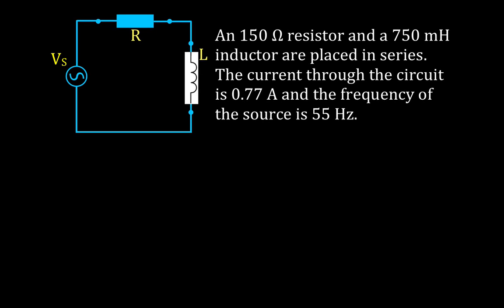This is the circuit we have. We have an RL circuit — a resistor and an inductor — and a time-varying voltage source. The resistor has a resistance of 150 ohms and is placed in series with an inductor of 750 millihenrys. The current through the circuit is 0.77 amperes and the frequency of the source is 55 hertz.